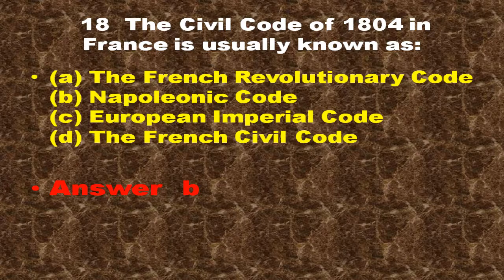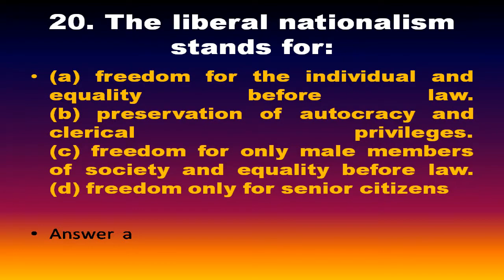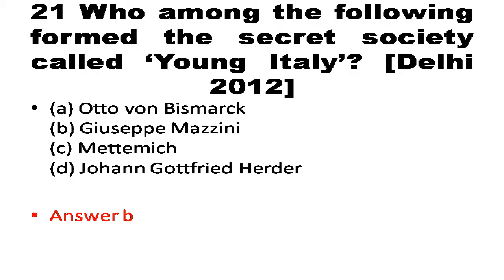Question number 19: The Napoleonic Code was exported to which of the following regions? Options are England, Spain, regions under French control, and Poland. The answer is regions under French control. Next question: Who among the following formed the secret society called Young Italy? The answer is Giuseppe Mazzini.